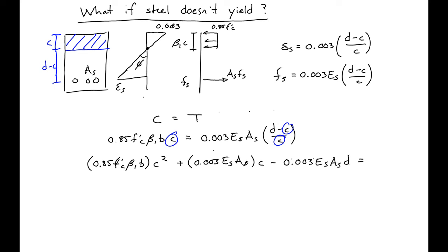After rearranging, we get a quadratic equation equal to zero, and our unknown is C. We'll need to solve for C using the quadratic formula or other means.